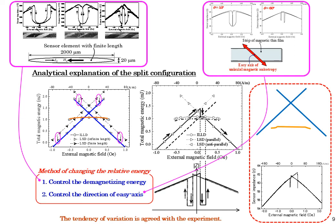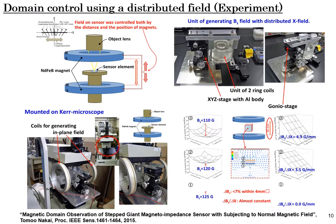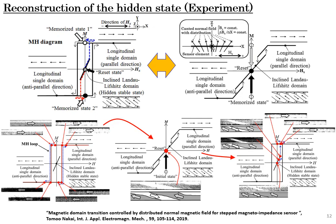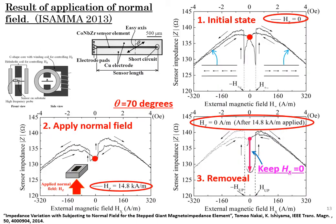We have carried out many experiments as follows. As a result, we can say that the artificial transition to the hidden multi-domain state was confirmed and established for this element.